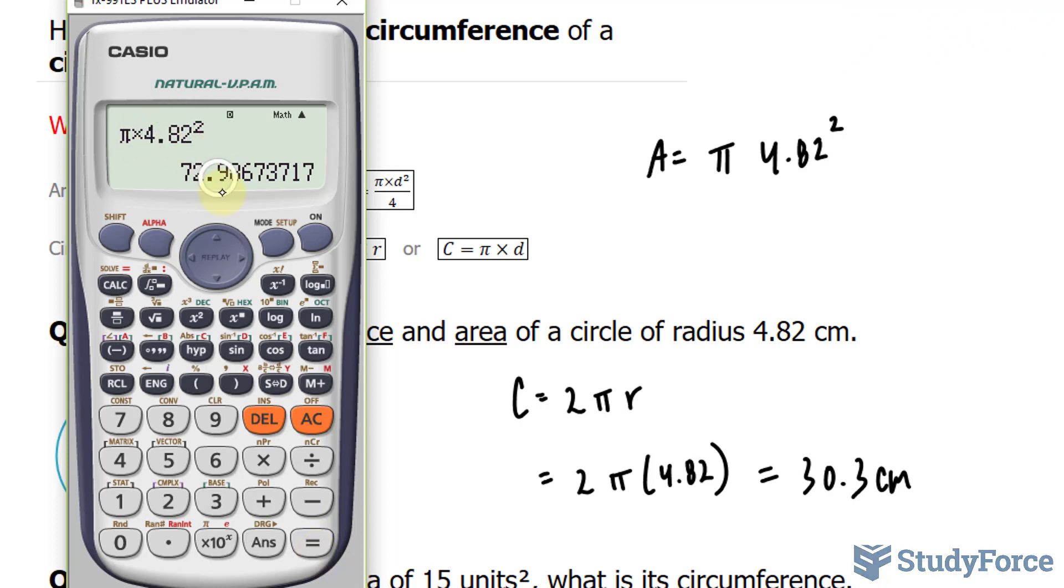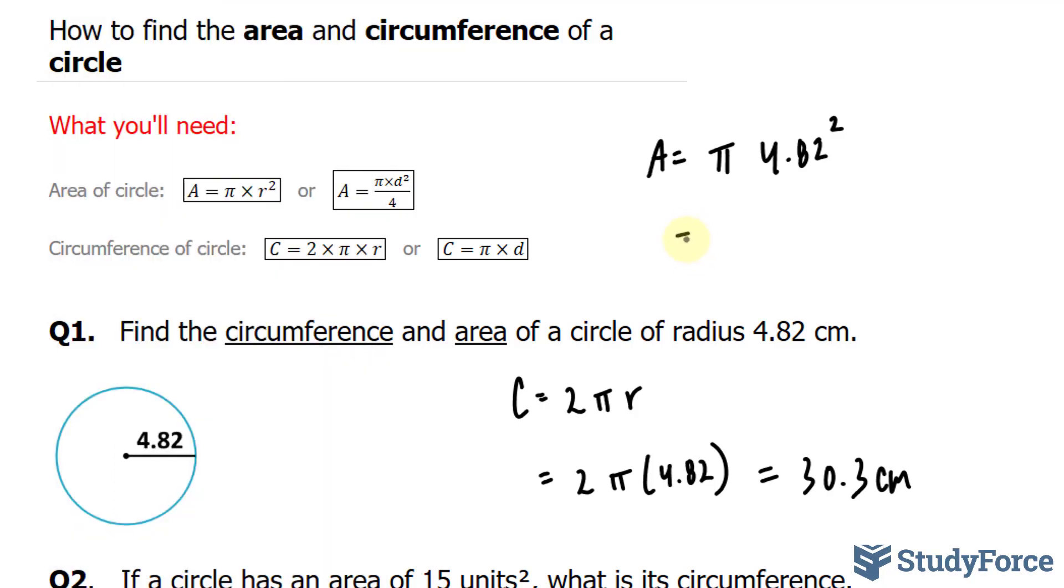And since this has 3 digits, I'll stop writing after the third, followed by an 8, so this 9 will go up by 1. We end up with 73.0. 73.0 centimeters, and since it's the area we'll write down squared. Now question 2 is slightly more complicated because it requires a little bit of algebra.